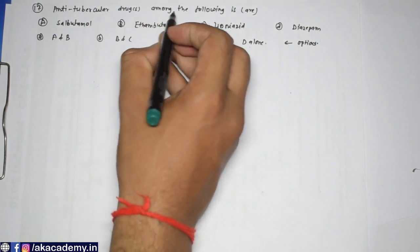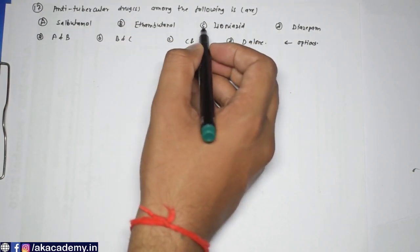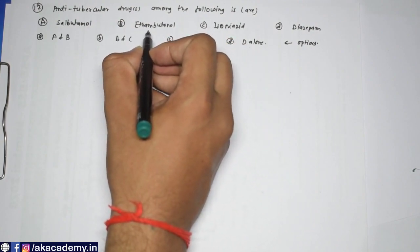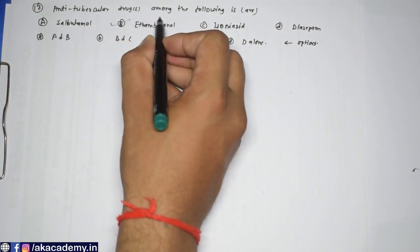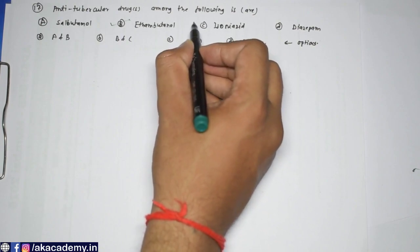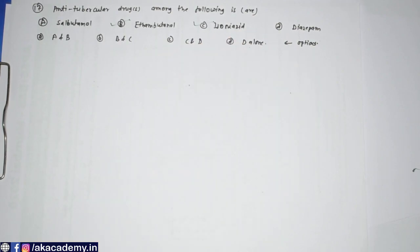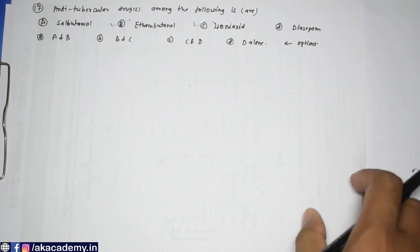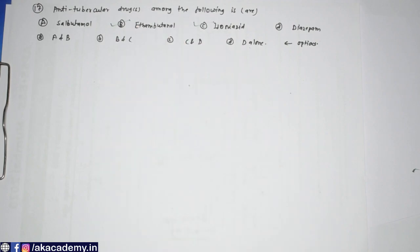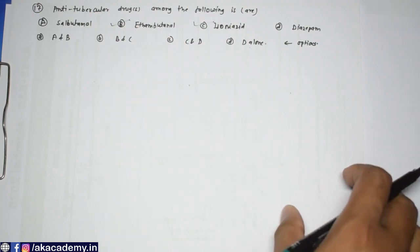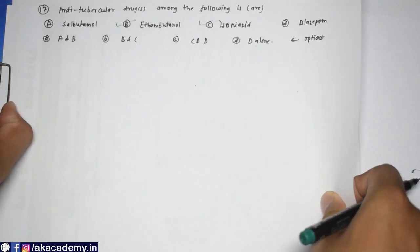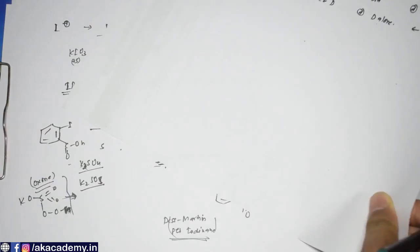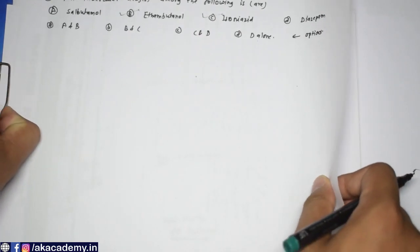The next question asks about an anti-tuberculosis drug among the following options. Ethambutol is an anti-tuberculosis drug — and actually both drugs listed are anti-tuberculosis drugs.